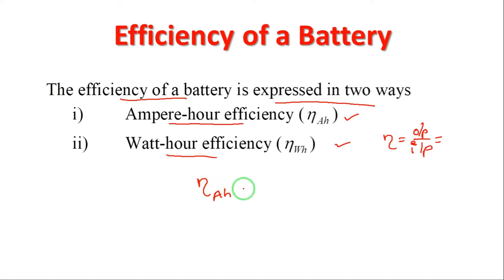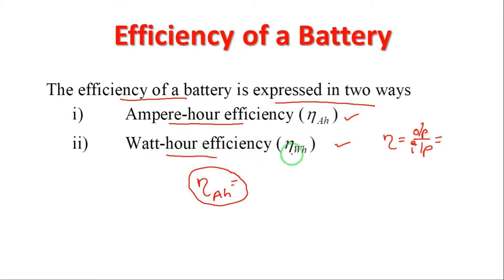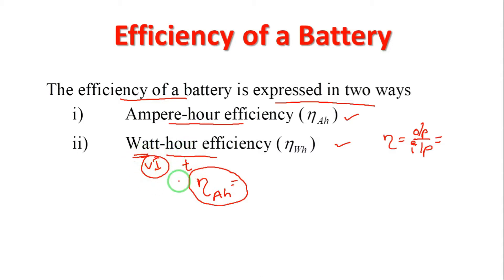Eta is indicated for efficiency. The symbol eta_AH is used for ampere-hour efficiency. The second one, watt-hour efficiency, is indicated by eta_WH, where W.H. means watt-hour. Watt means power, which is voltage multiplied by current (V × I), and hour is indicated for time T.